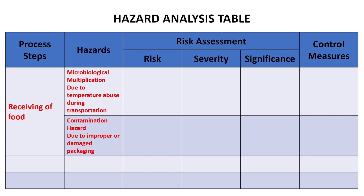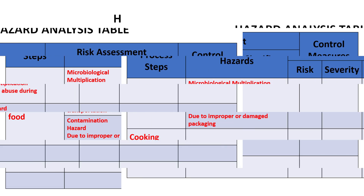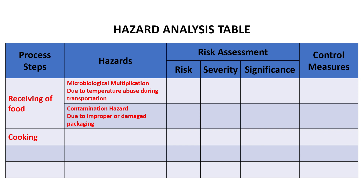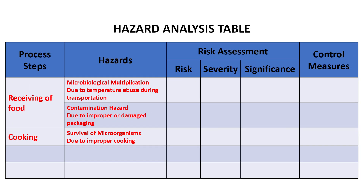We will take another example — the process step of cooking — to explain the concept of hazard analysis further. Cooking is a heat treatment, and for any heat treatment where you are trying to kill microorganisms, one of the most important potential hazards is the survival of microorganisms. If you do not cook the food properly, the microorganisms will survive and can later cause food poisoning. These two process steps — receiving and cooking — will be carried throughout this video to explain how hazard analysis happens.